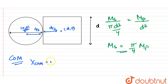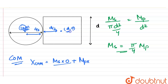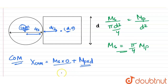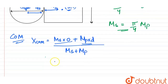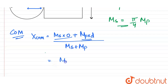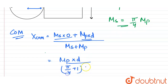Calculating the x-coordinate of center of mass: it becomes (mass of disc × 0 + mass of plate × d) divided by (mass of disc + mass of plate). This comes out to be mp·d divided by (π/4·mp + mp). The mp cancels out, giving x_cm = d / (π/4 + 1).